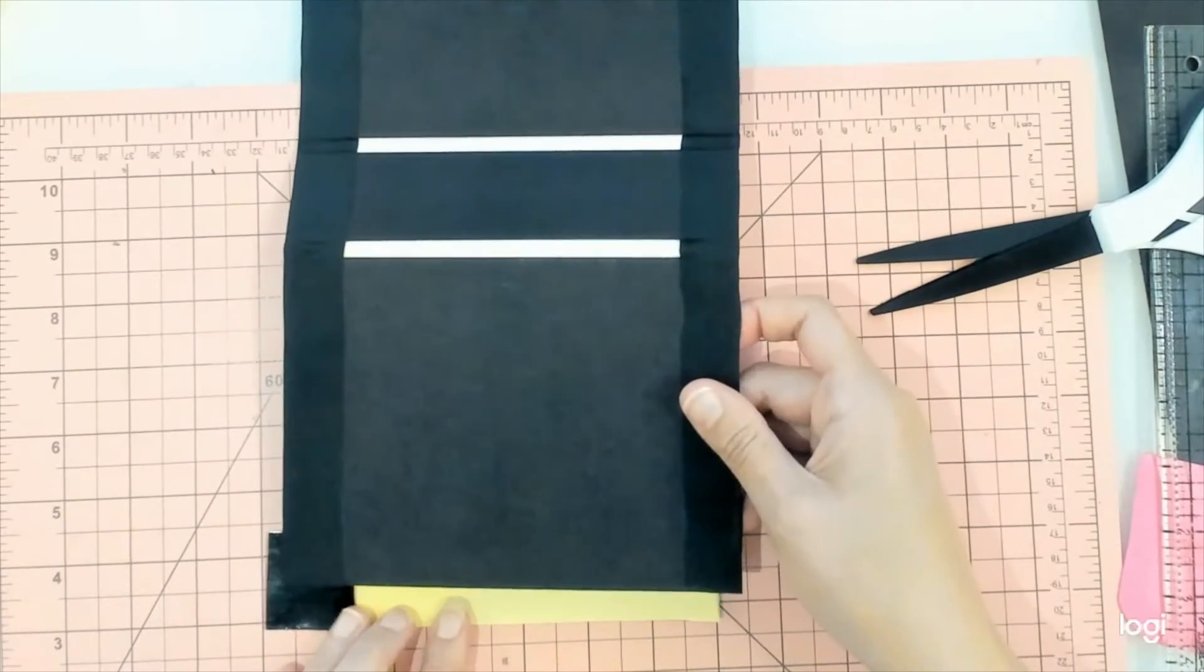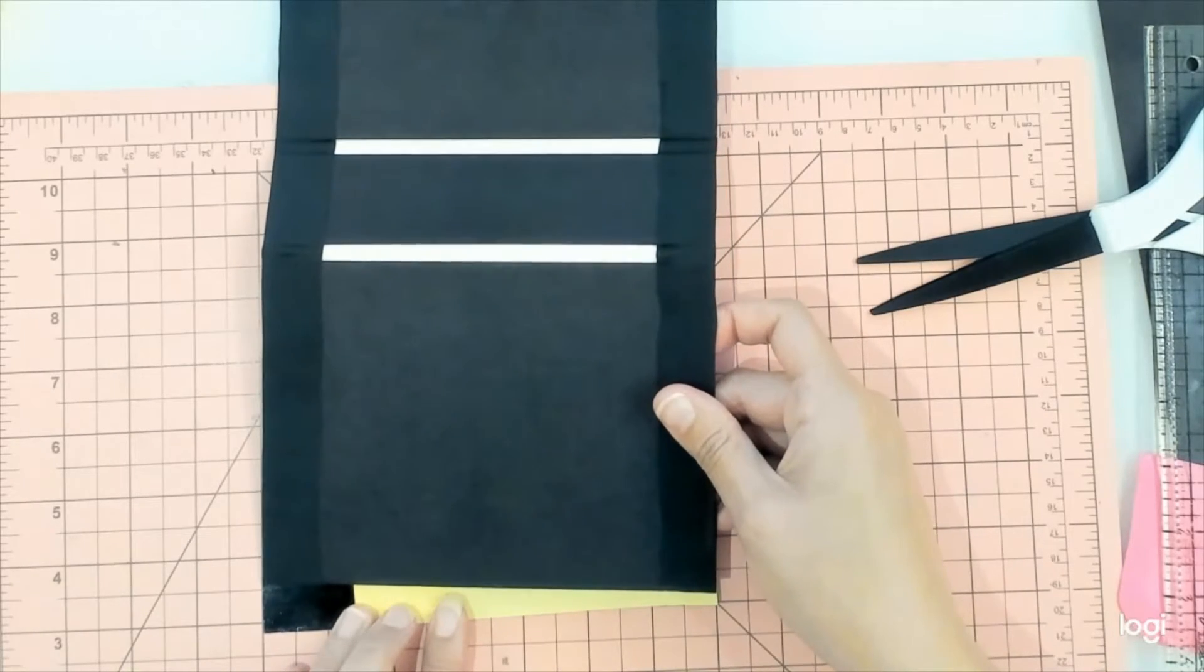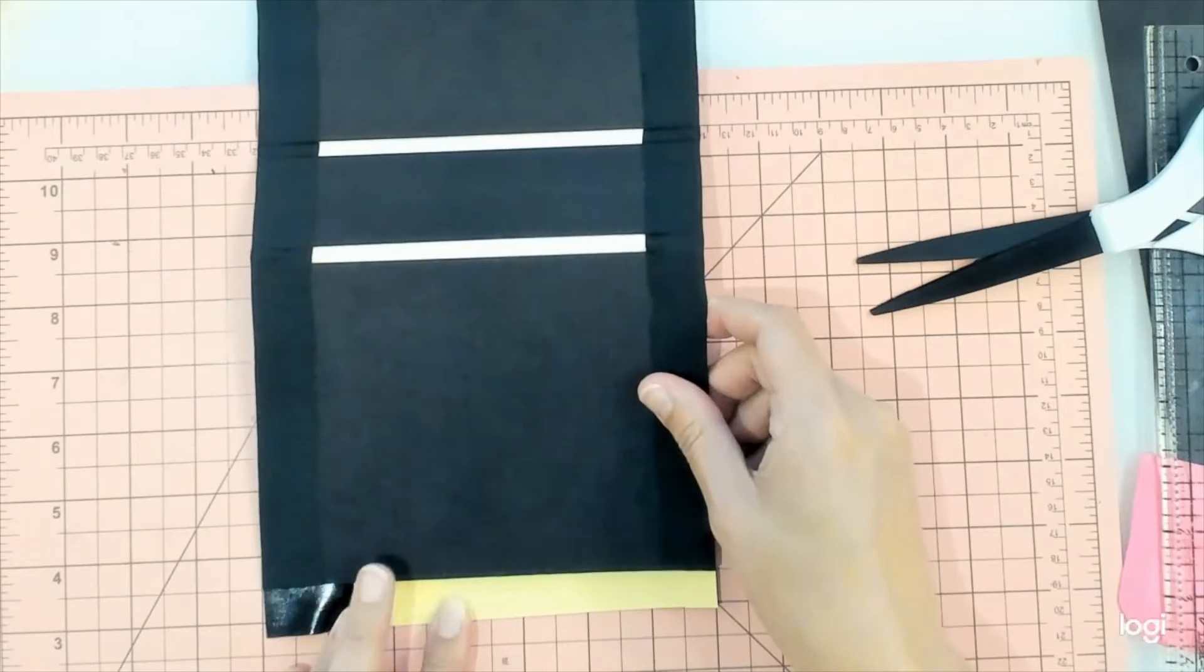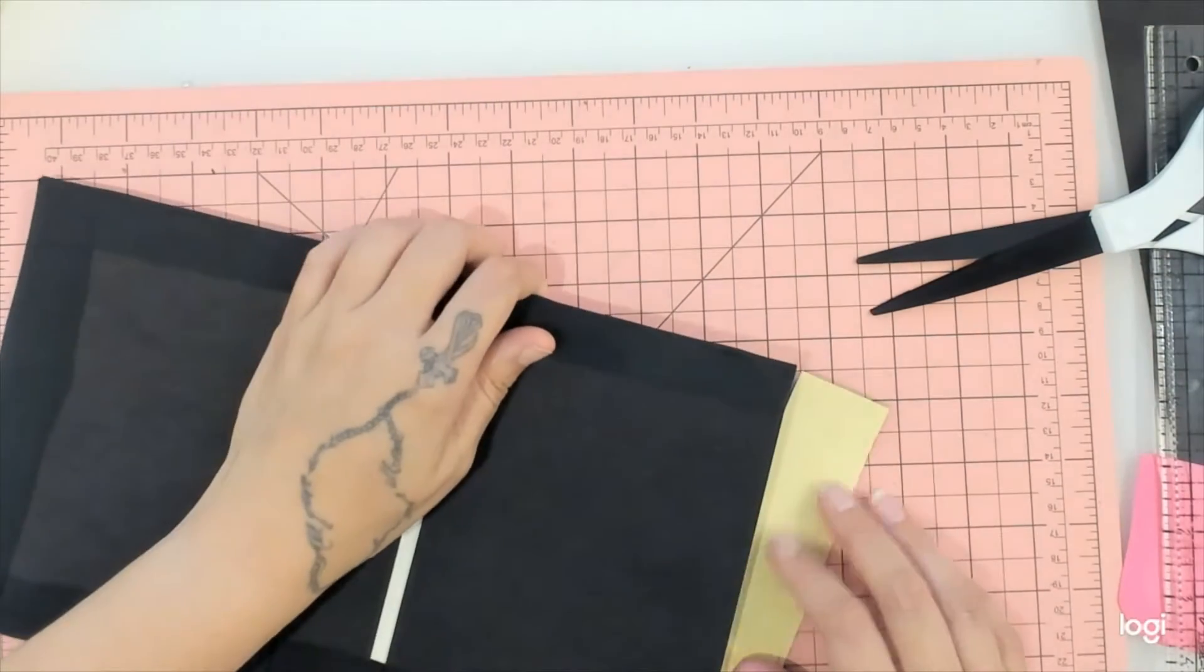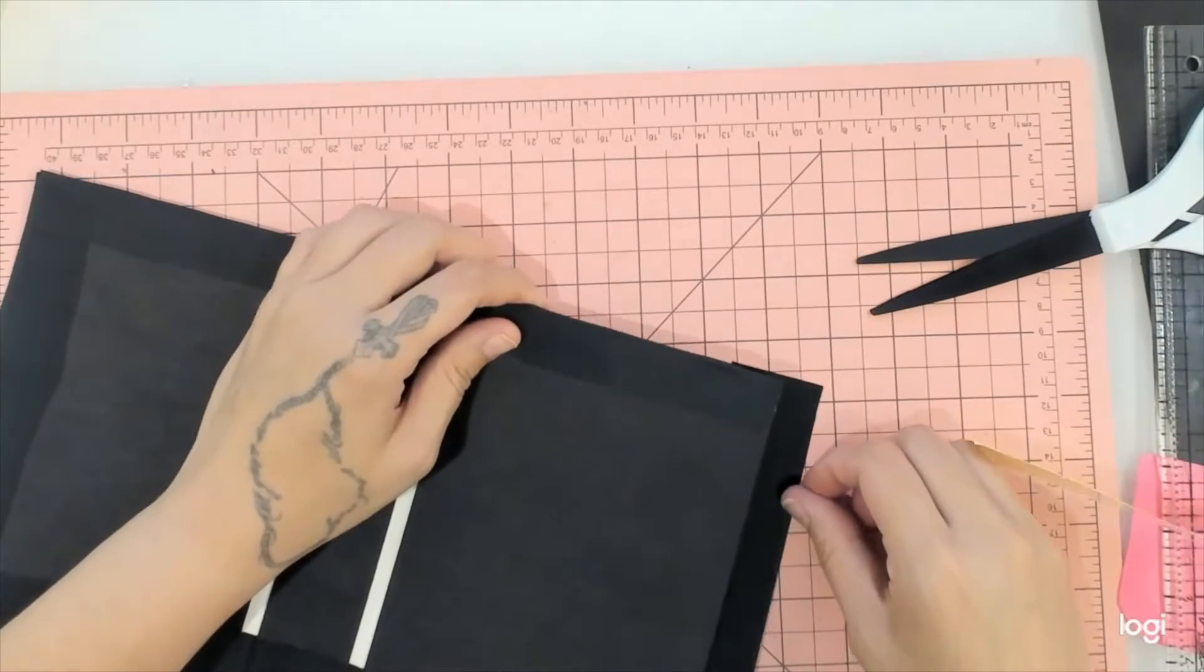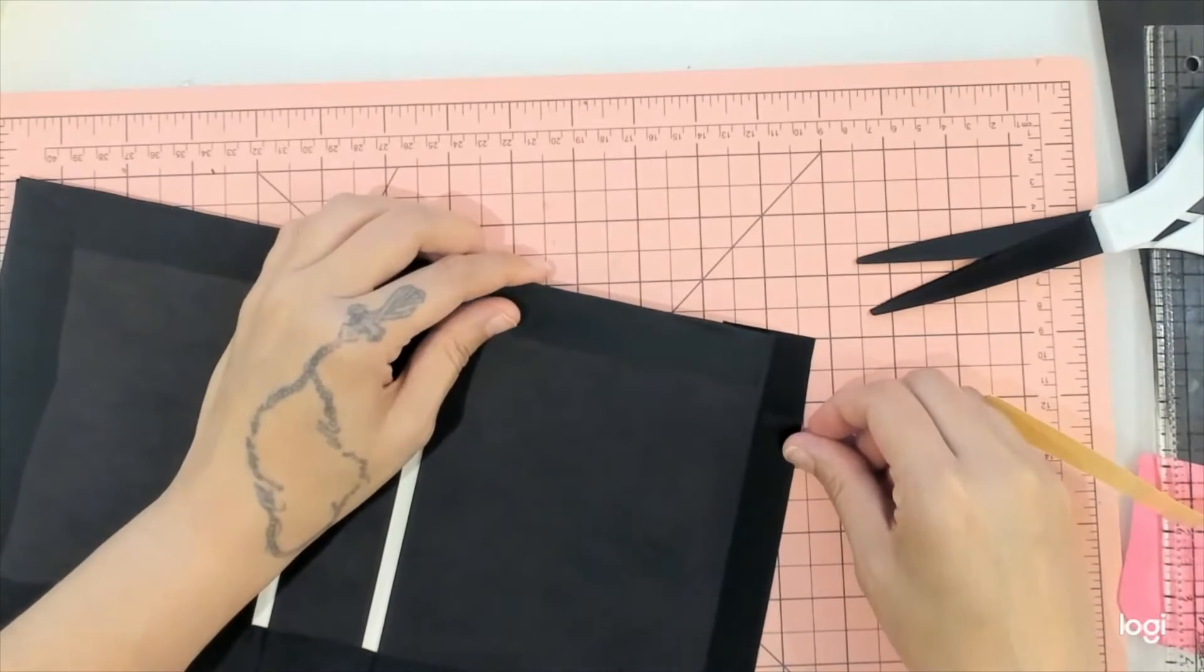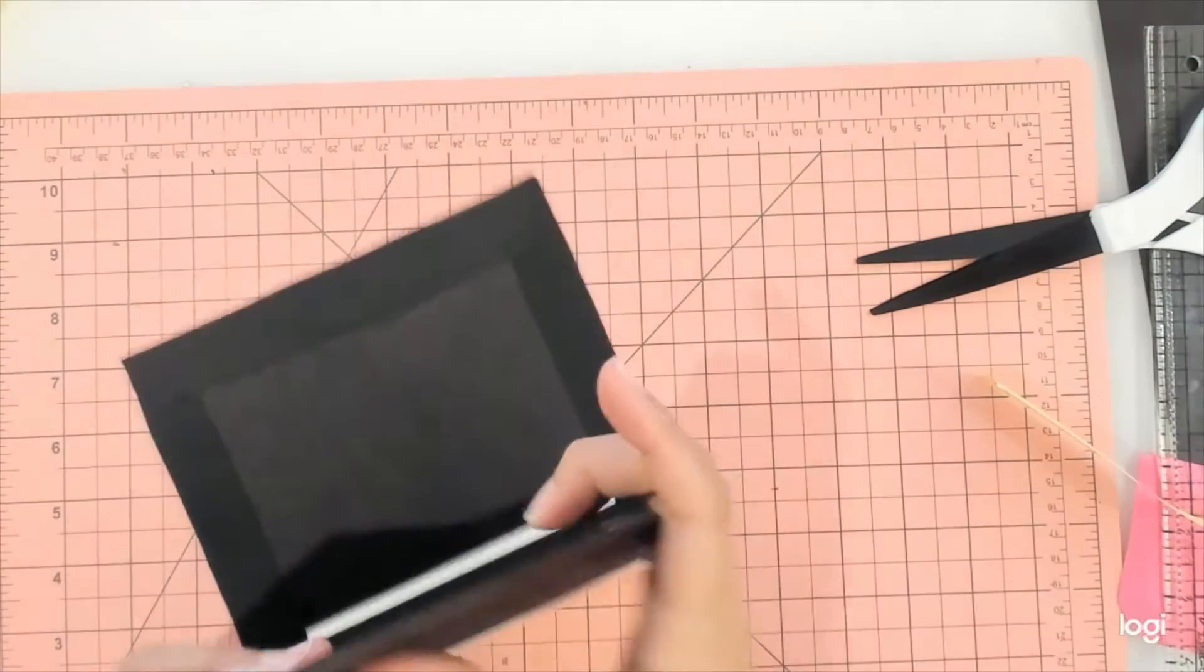Just stick that little piece and then make sure it's straight, and take the rest off. Yeah, that's so much easier.